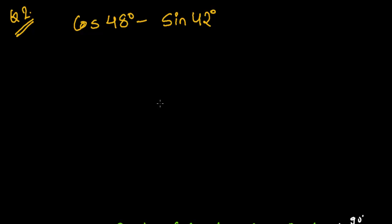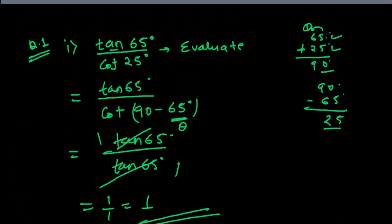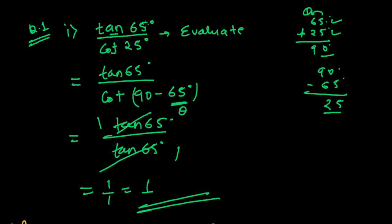Hi friends, this is another problem of trigonometric ratios of complementary angles: cos 48° minus sin 42°. We recently finished another problem, tan 65° upon cot 25°.